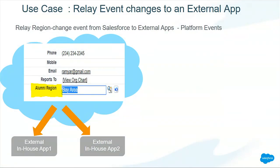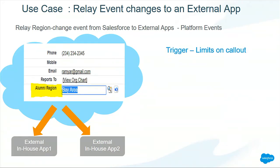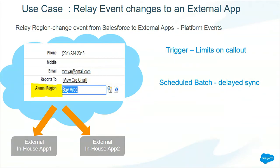In our organization, Salesforce is our single source of truth. We had to relay — for example, when a person becomes an alumni or a region changes — we had to relay these region changes constantly to our in-house apps. Initially, we created triggers as usual, but we ran into the governor limit on callouts, which is just 100 callouts allowed. We then relied on batch, but since it runs on a scheduled basis, there would be a delayed sync. Business wanted real-time updates, so platform events came to our rescue for constantly relaying these event changes to our in-house apps.